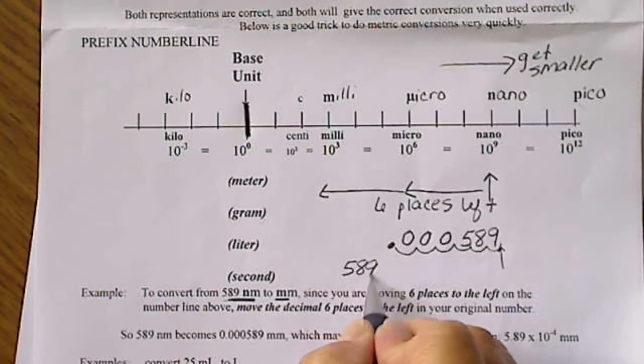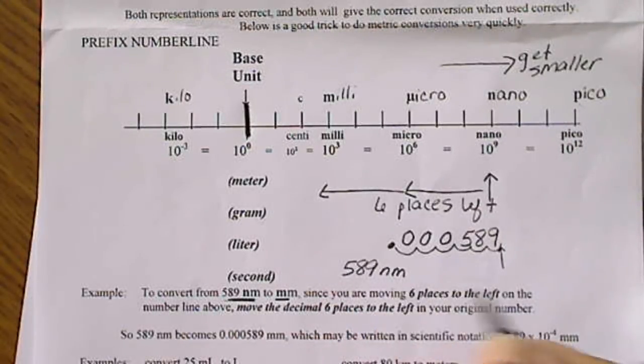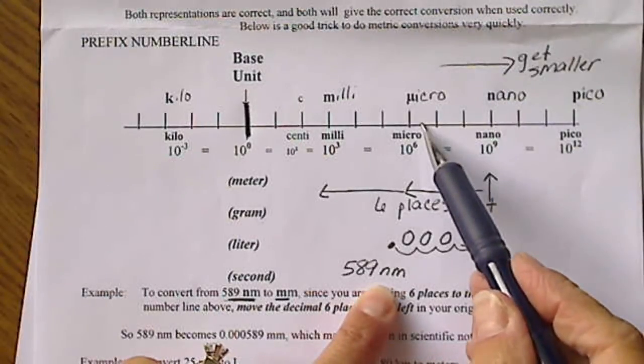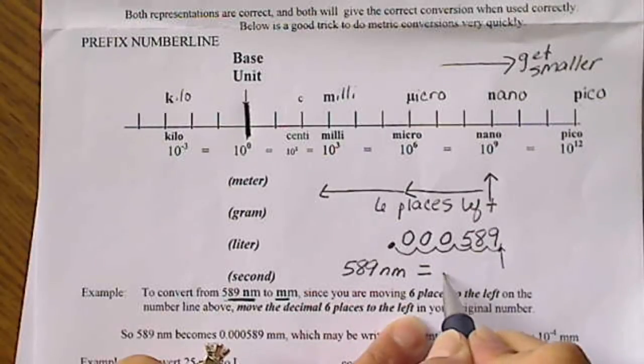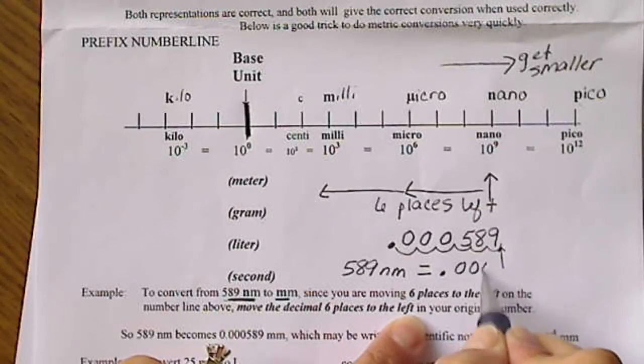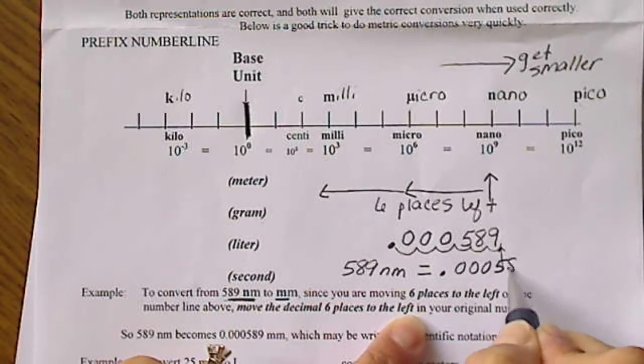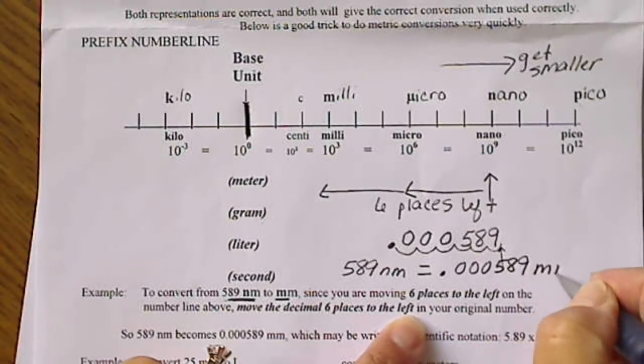So 589 nanometers, which we could never see. We couldn't even see that with a microscope. So 589 nanometers is equal to 0.000589 millimeters.